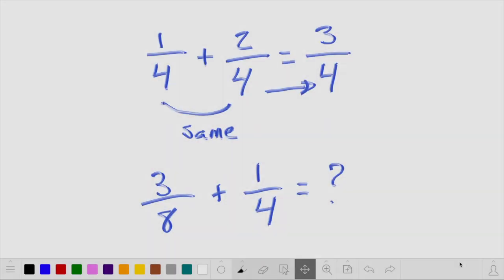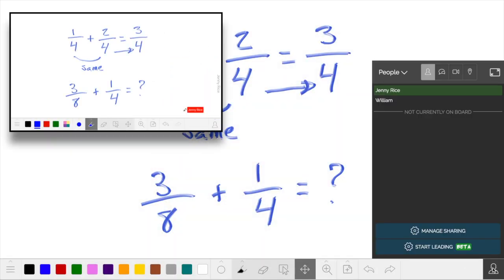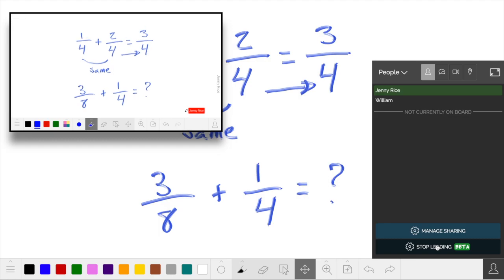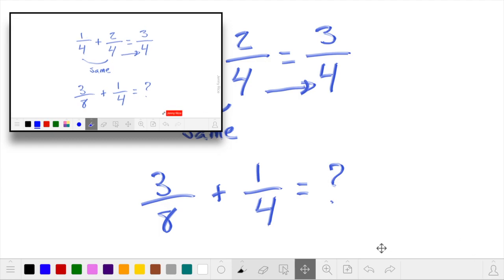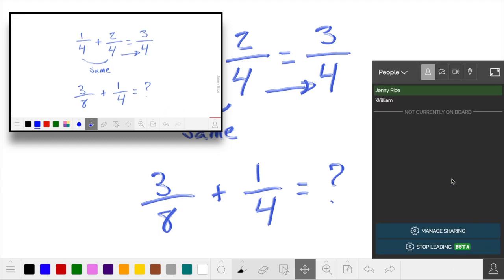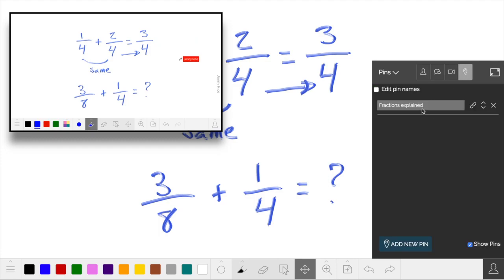Or use the Leading functionality. Select the Person icon, then click Start Leading. Everyone on your board will now always see what you see, even at the same zoom level.